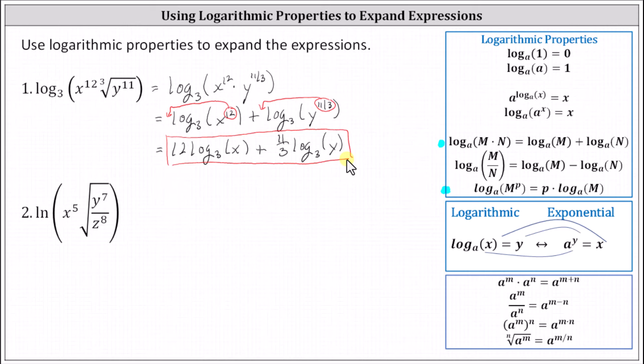For the second example, we have natural log of x to the fifth times the square root of the quotient of y to the seventh and z to the eighth. Recall for a square root, the index is two. Let's begin by writing the expression using rational exponents.